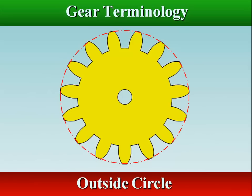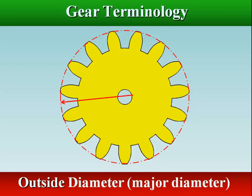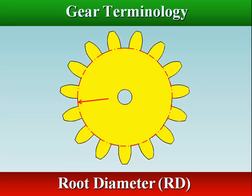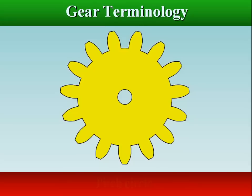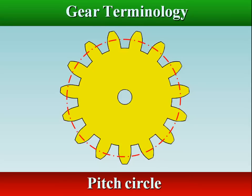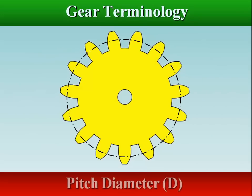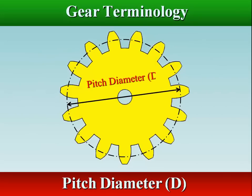The outside circle coincides with the tops of the teeth. Outside diameter is the overall diameter of the gear. The root circle coincides with the bottoms of the tooth spaces. Root diameter is the diameter at the bottom of the tooth. Pitch circle is an imaginary circle which will contact the pitch circle of another gear when in mesh. Pitch diameter is the diameter of the pitch circle from which the gear is designed.